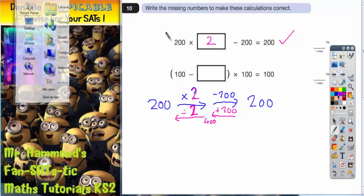Now let's do a similar sort of thing for the second one. 100 take away a mystery number. It's all in a bracket. And remember brackets you've got to do first. Then times by 100 will give you 100. So let's try and do a similar strategy. So start with the 100. This 100 here.